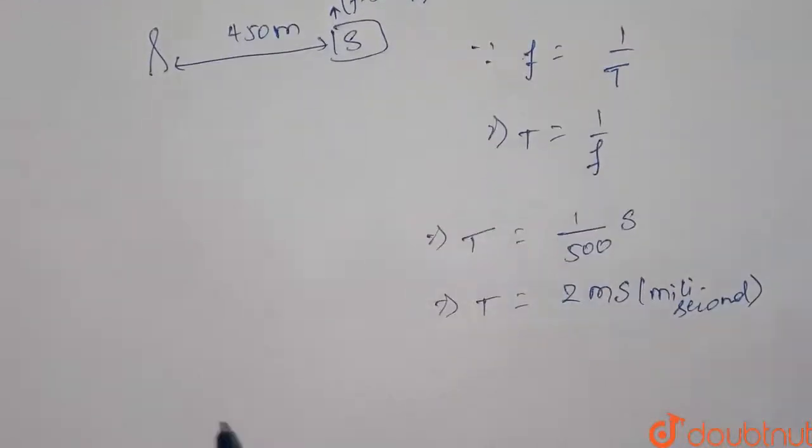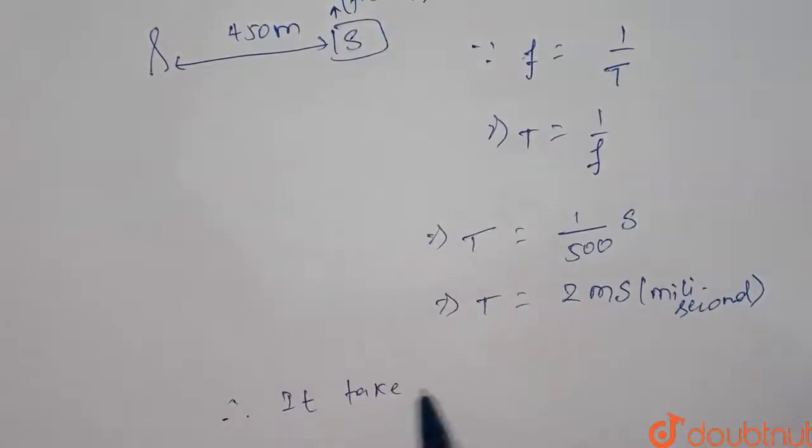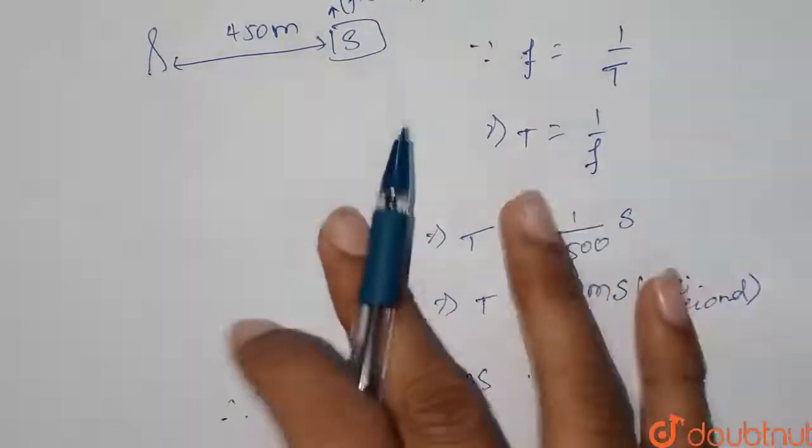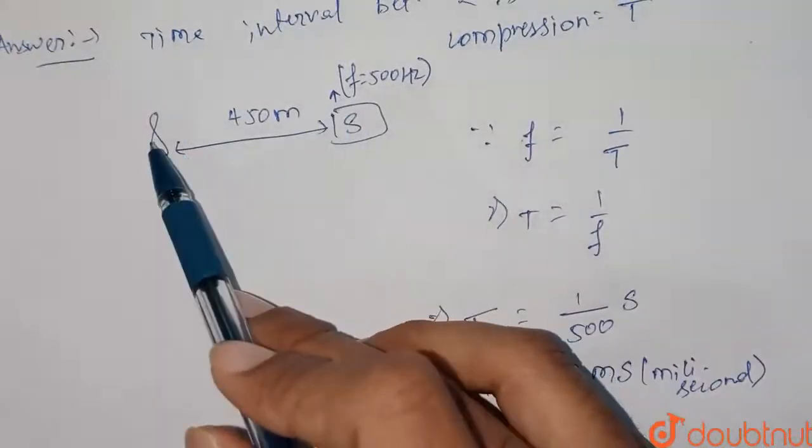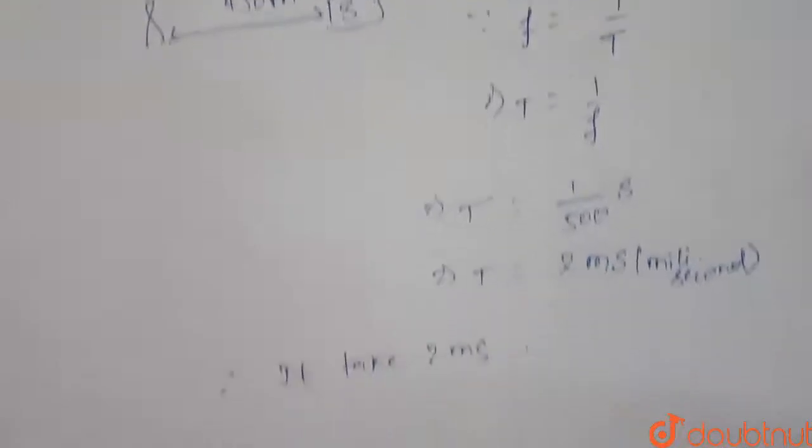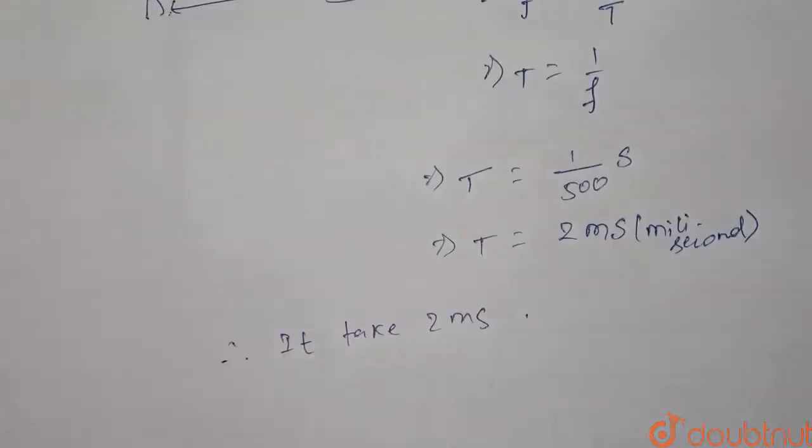Thus, it takes 2 millisecond time interval to reach 2 successive compressions from the source to the observer. That's all for this question guys. Thank you very much.